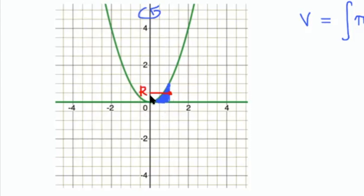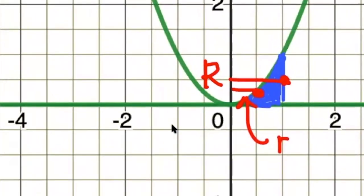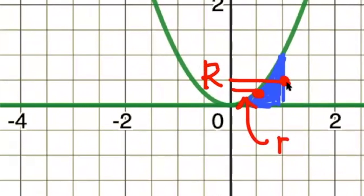My little r is going to go from the axis of revolution to the closest boundary of the shape, which is this little piece here. That's going to represent my little r. And we'll zoom in a bit just so you can see that clearly.